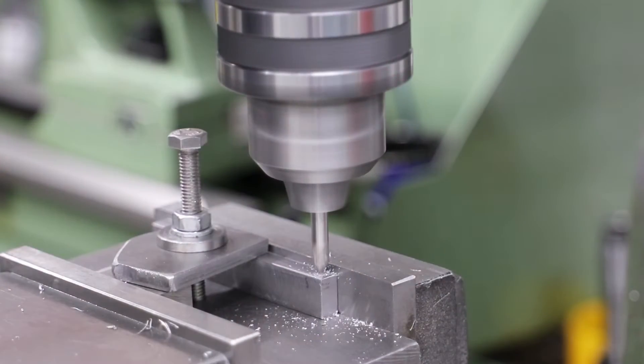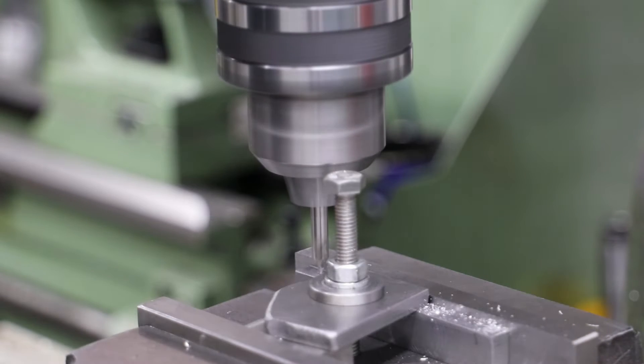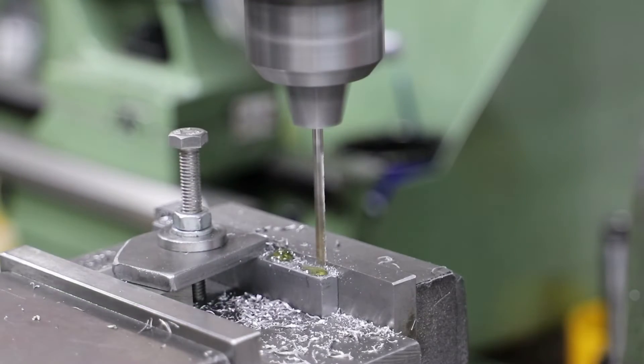Next I use a simple jig to hold each part and then centre drill and drill the three holes for the pivot pins.